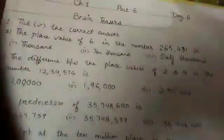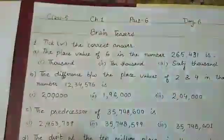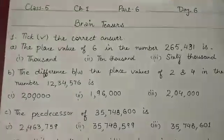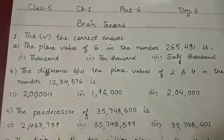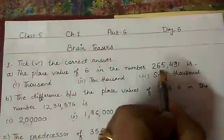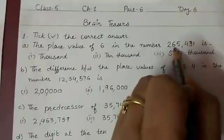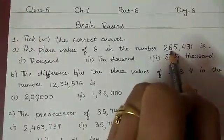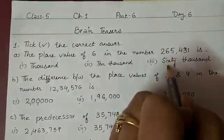Let us start. First question, tick the correct option. The place value of 6 in the number 265,431 is, as 6 is at the 10,000 place, so the value of 6 should be 60,000.